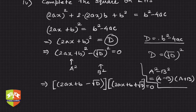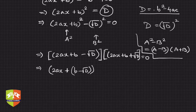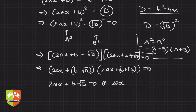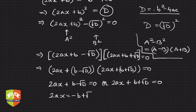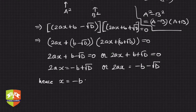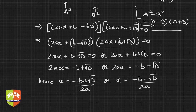So either 2ax + b − √D = 0 or 2ax + b + √D = 0. That means either 2ax = −b + √D or 2ax = −b − √D. Hence, x = (−b + √D) / 2a or x = (−b − √D) / 2a.